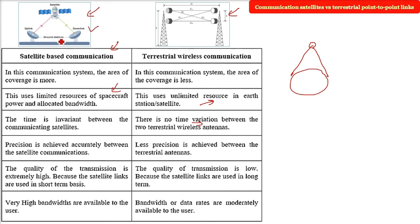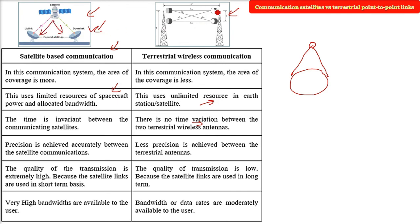The quality of transmission in satellite is extremely high because satellite links are used on a short-term basis; in terrestrial, the quality is lower as links are used long-term. Very high bandwidths are available to satellite users, while terrestrial data rates are only moderately available. In summary: satellite delay is higher, terrestrial delay is less; satellites broadcast to everyone, while microwave terrestrial links do not — so confidentiality in terrestrial links is more secure.